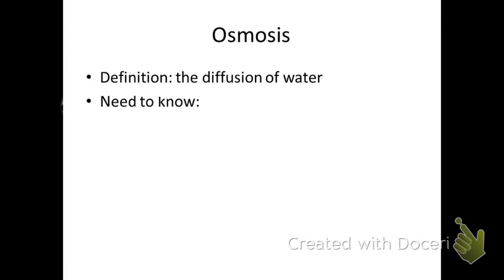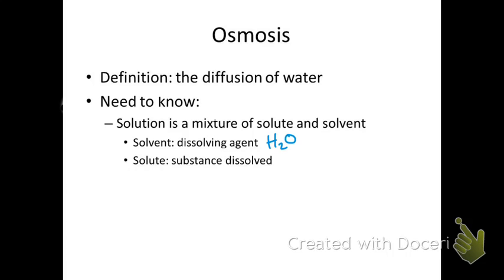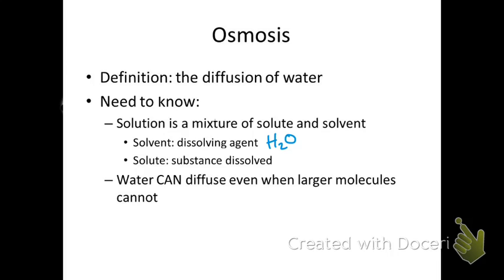Osmosis is a special term for the diffusion of water through a channel called an aquaporin. Any solution is a mixture of solute and solvent. A solvent is a dissolving agent — in the body that's water. A solute is the substance being dissolved. Osmosis is discussed in terms of water and solute concentration. What's special about osmosis is that water can diffuse and reach equilibrium even when large things like sugar cannot.